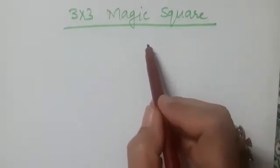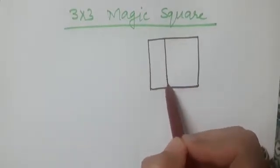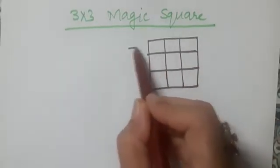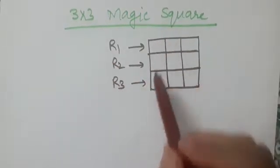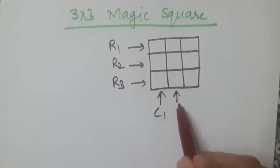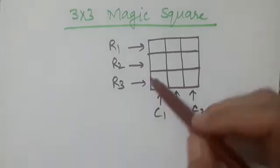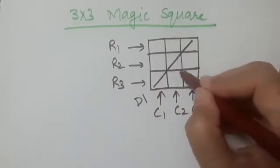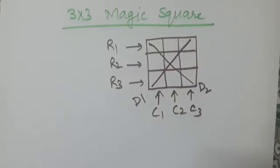So what is a three by three magic square? For this we need to make a grid first, and this grid is a three by three grid. You see that there are three rows — we name them as R1, R2, and R3 — and there are three columns — we name them as C1, C2, C3 — and you will see that there are two diagonals: this is D1 and this is D2.